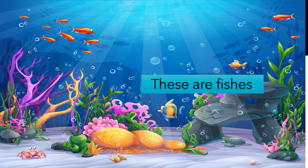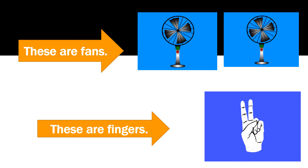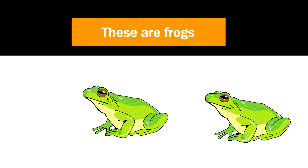Let's read some sentences related with the picture. These are fishes. These are fans. Do you have a fan at your home? Yes. Kya aapke ghar mein fan hai? Yes. These are fans — Yaha fan hai. These are fingers — Yaha ungliyan hain. These are frogs — Yaha mendhak hain. Frog means mendhak. Have you seen a mendhak or frog?